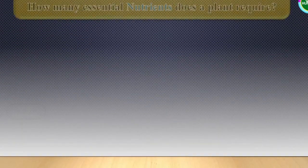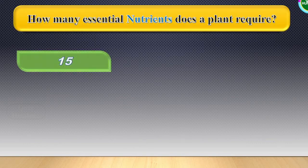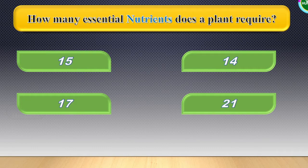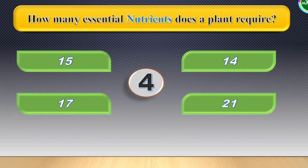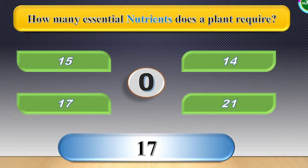Next question: How many essential nutrients does a plant require? The options are visible in the screen. Your time starts now. The correct answer for this one is 17.